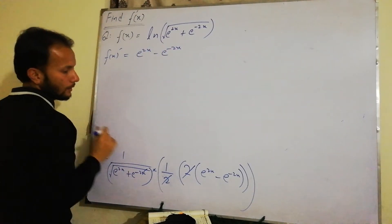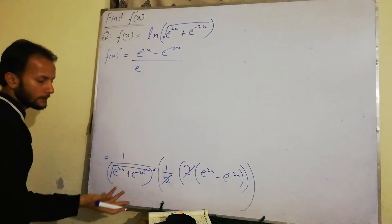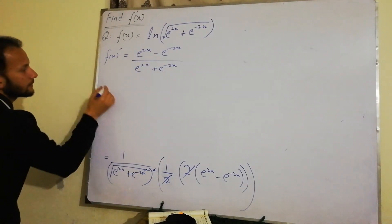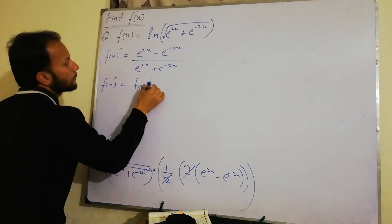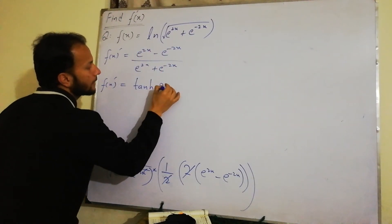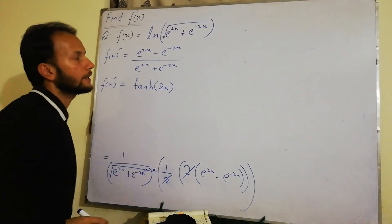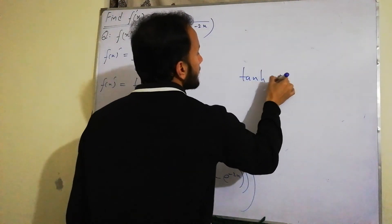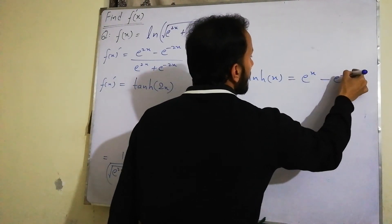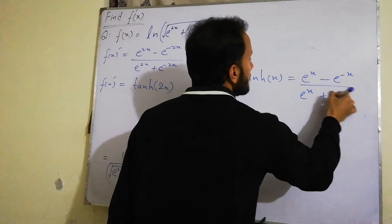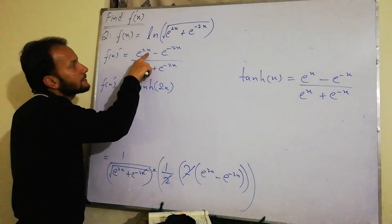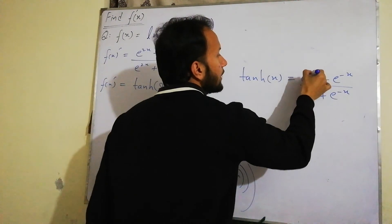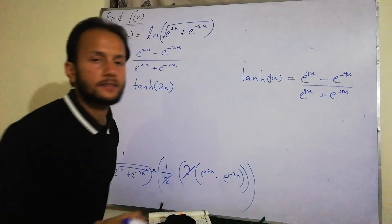We have e to the power 2x minus e to the power minus 2x, and in the radical form the terms cancel out. We can write this as tan hyperbolic. The tan hyperbolic formula is: tanh x equals (e to the power x minus e to the power minus x) divided by (e to the power x plus e to the power minus x). Here x is replaced by 2x, so the result is tanh 2x.